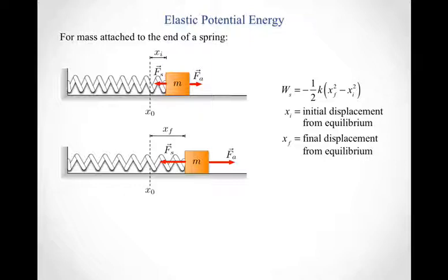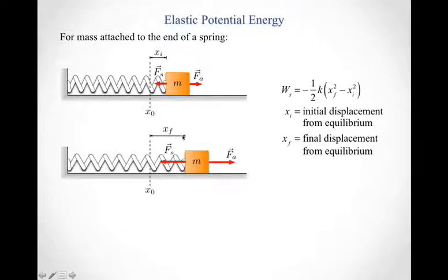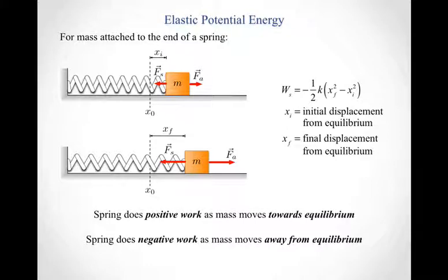We had an equation to calculate the work done by a spring. One of the ways we wrote that equation was that the work done by a spring equals negative one-half k — the spring constant — times x-final squared minus x-initial squared. So x-final is the final displacement of the mass from equilibrium, and x-initial is the initial displacement of the mass from equilibrium. In our drawing, you can see the initial displacement from equilibrium — how far the spring was stretched or compressed initially — and the final displacement from equilibrium. This equation tells us the spring does positive work as the mass moves towards equilibrium and negative work as the mass moves away.